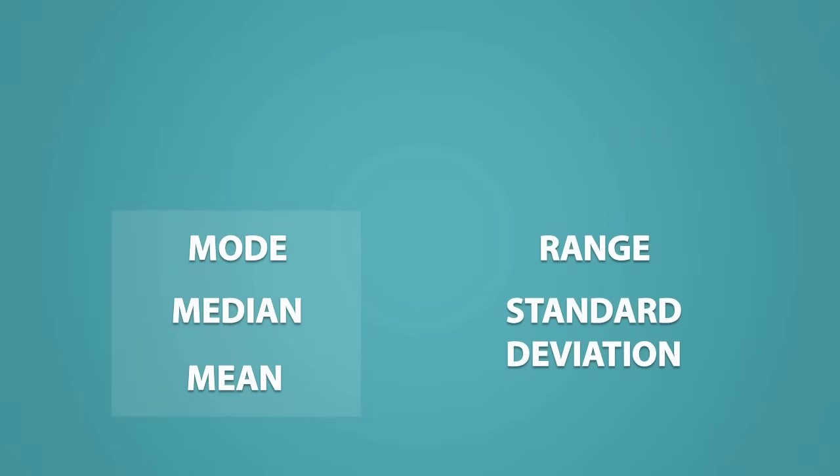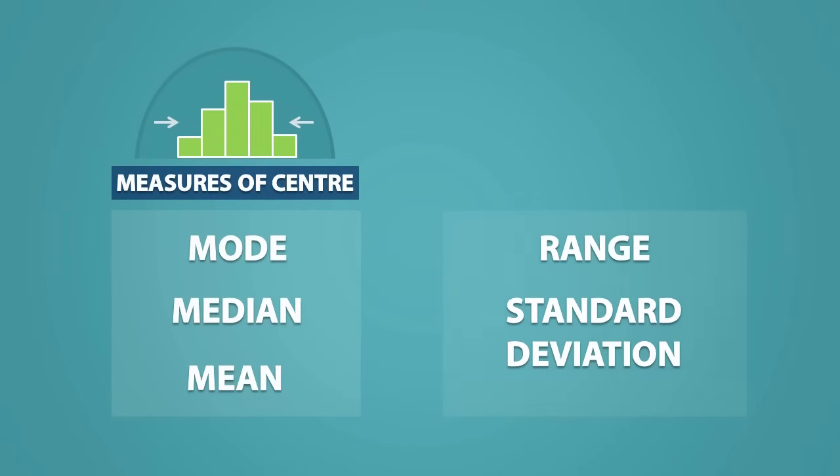Specifically, the mode, median, and mean are measures of center or central tendency, and the range and standard deviation are measures of spread.